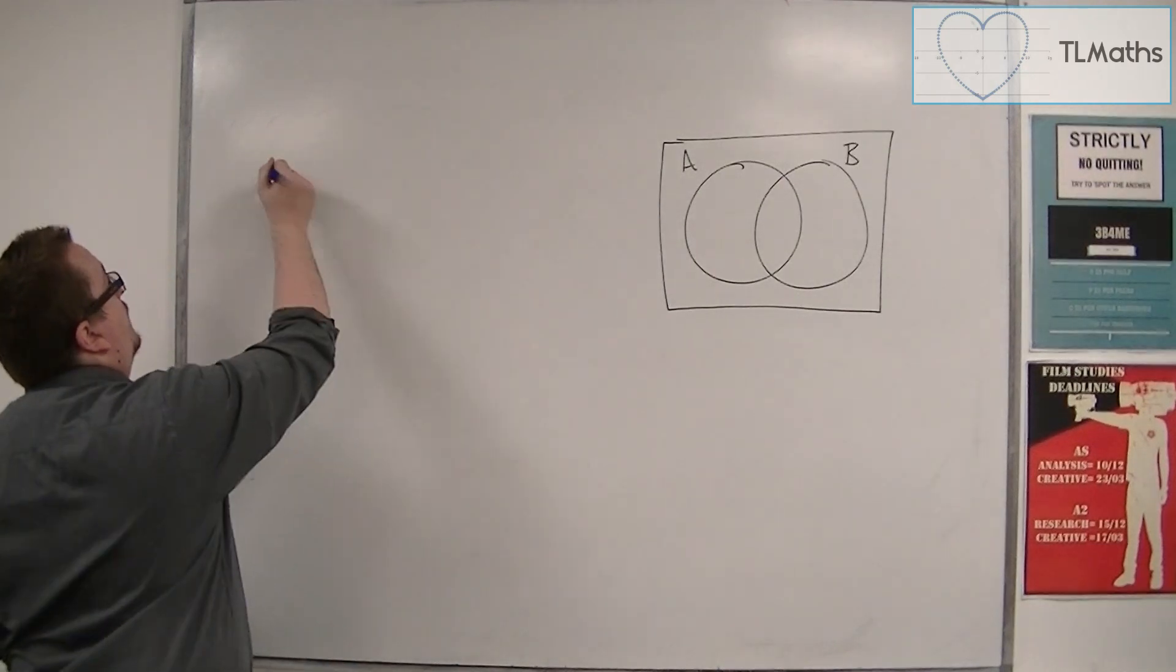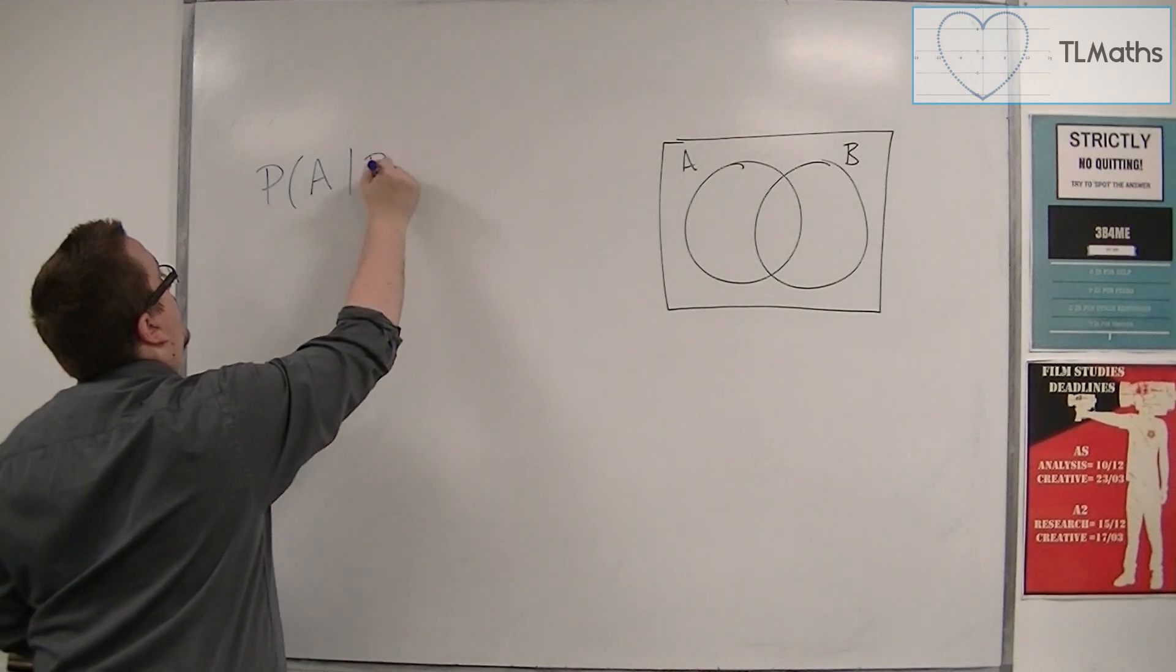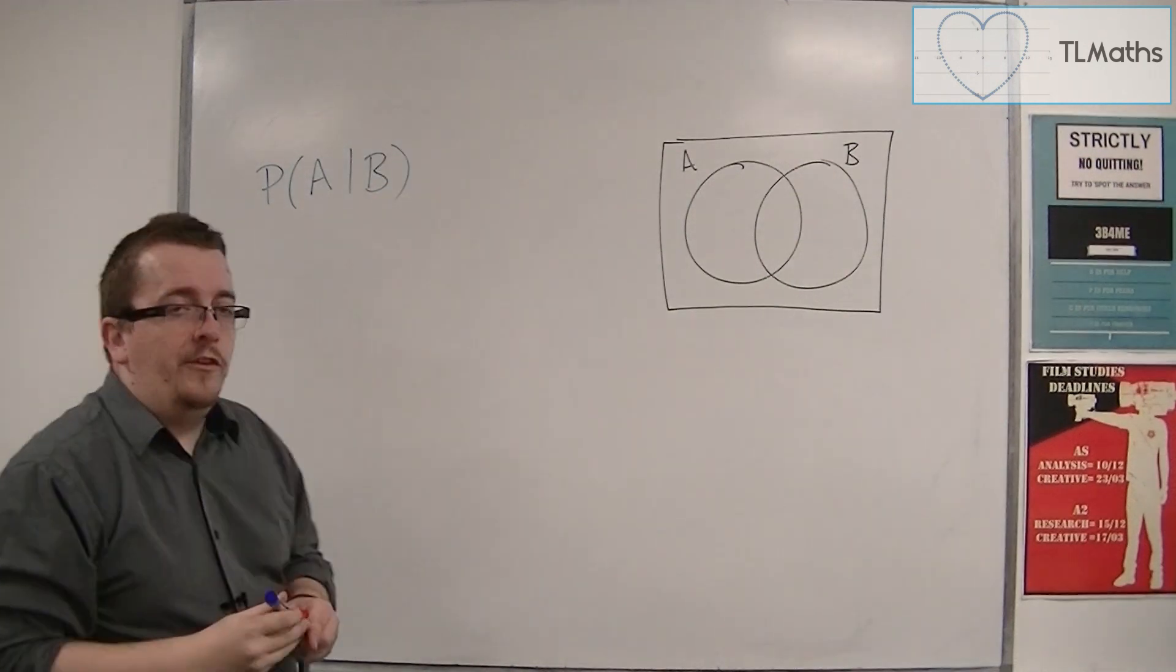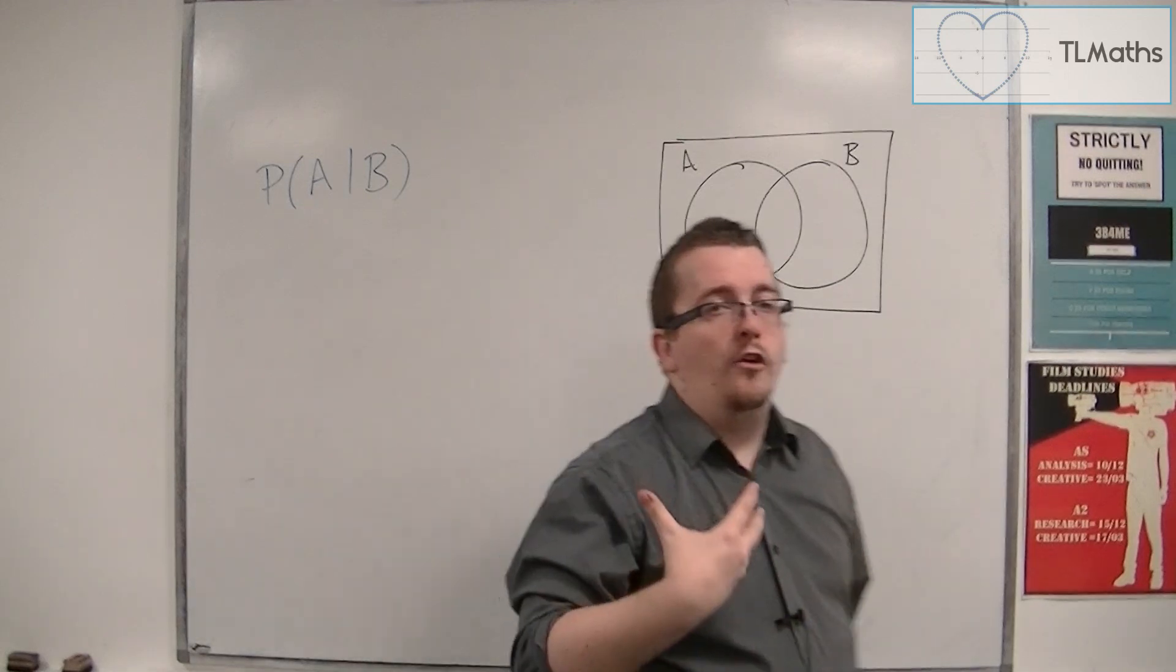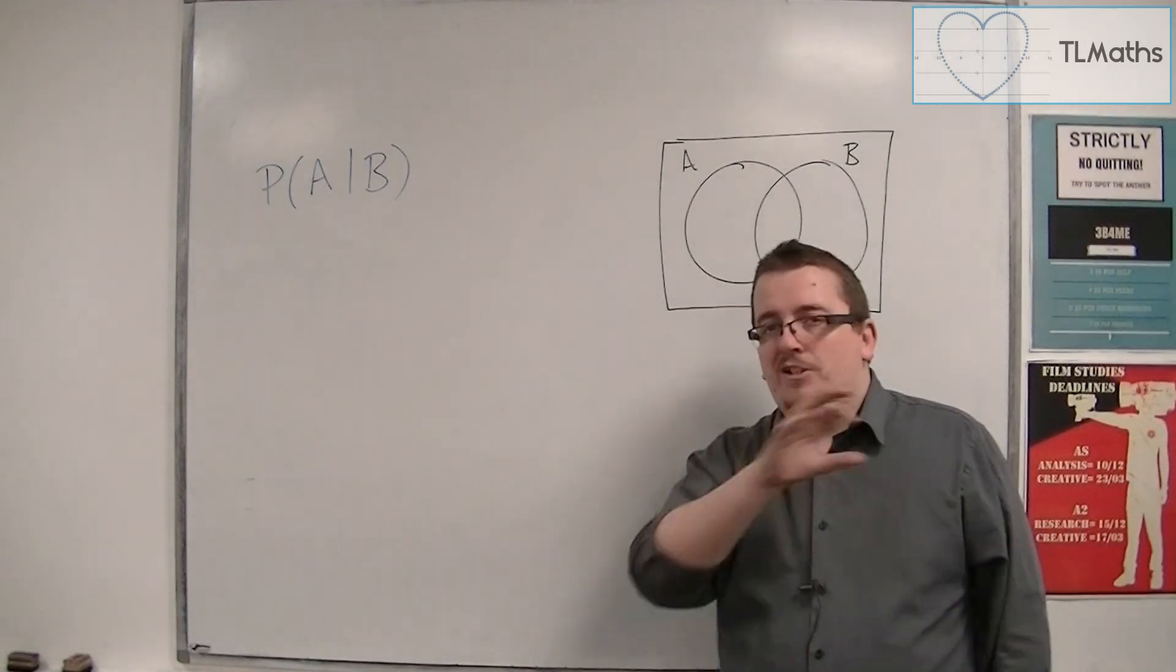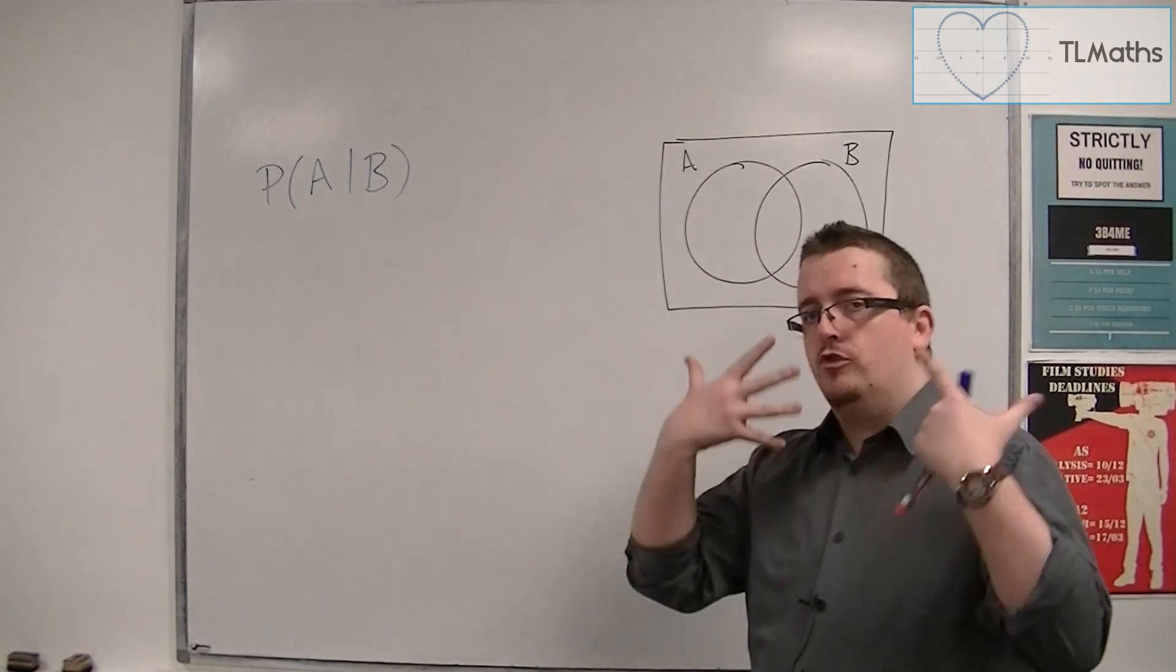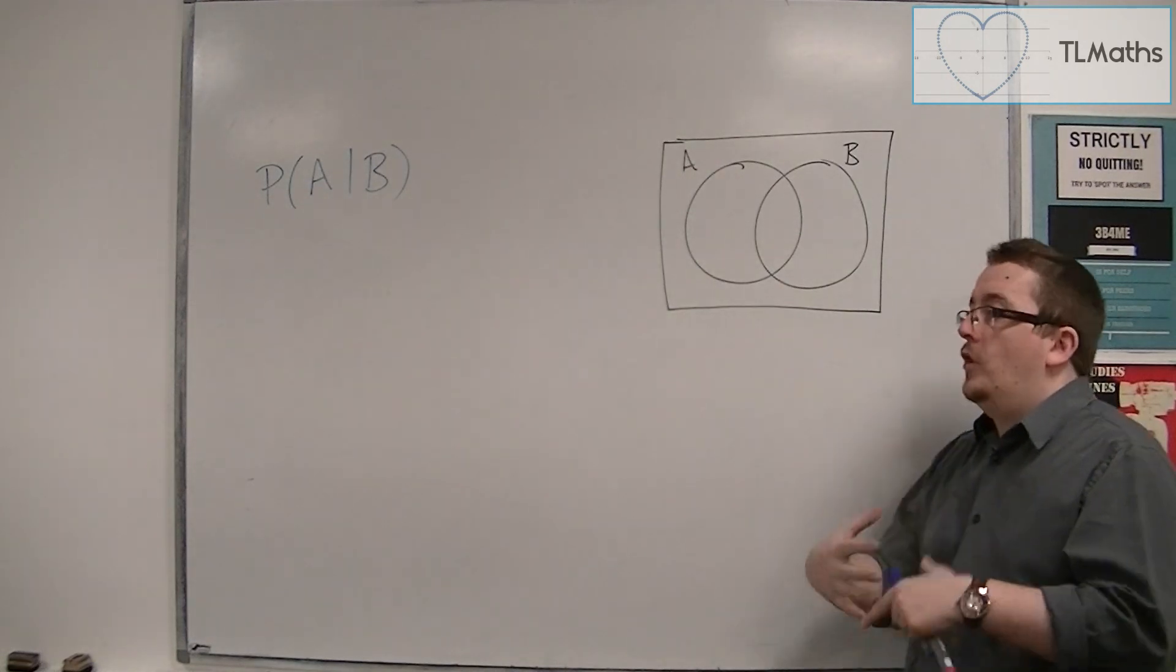then the conditional probability could be written as probability of A given B. And what this means is that we want to find the probability of the event A happening, given that B has already happened. So, we've got this extra bit of information, this extra condition on A.